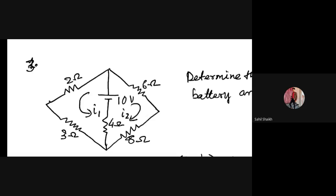Next I'll ask the girls — Bhumika, are you there? Yes, ma'am. Can you tell me the equation for loop 2? Minus 18 I2 plus 4 I1 equal to 10. Very good! Actually the sign will be plus, but at least you have told it correctly — only the signs are a bit different. I'll show you that. Very good.